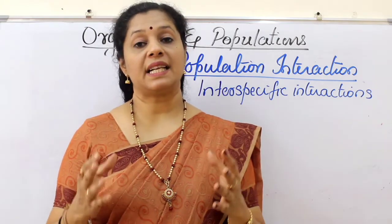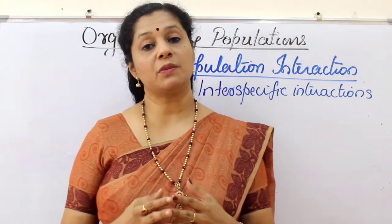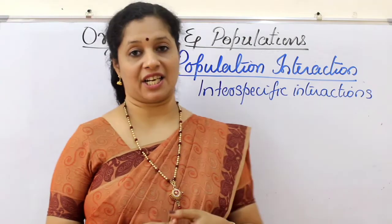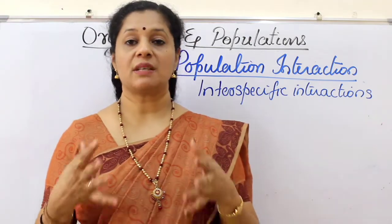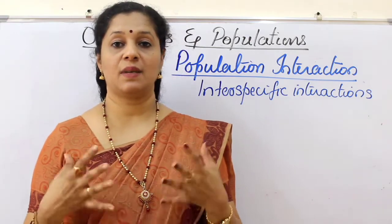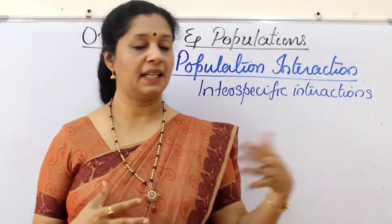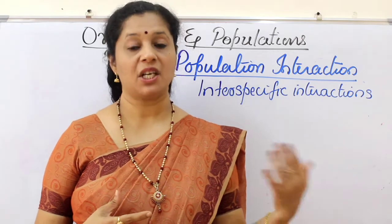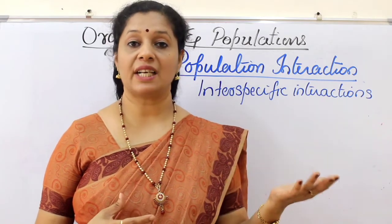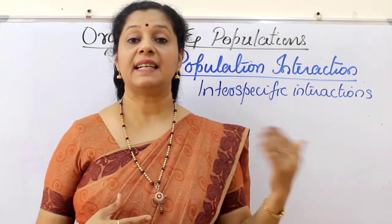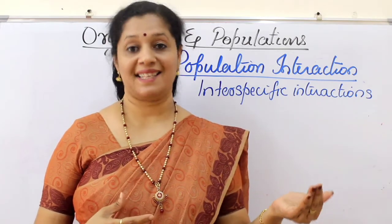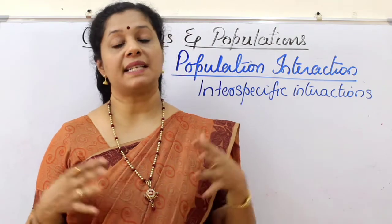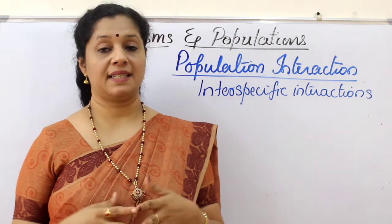The interaction between two species is called inter-specific interactions. For example, human beings interact with a plant species — for our food we depend on them. So that is a kind of inter-specific interaction. This can be classified into various categories.